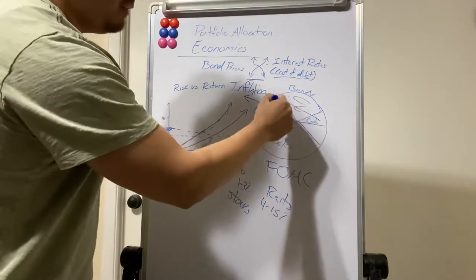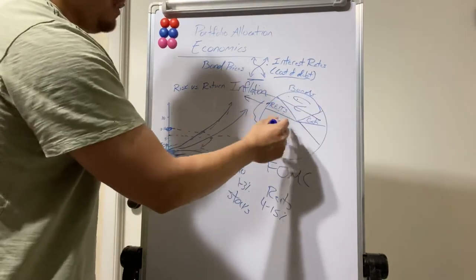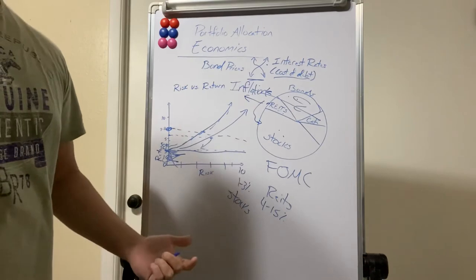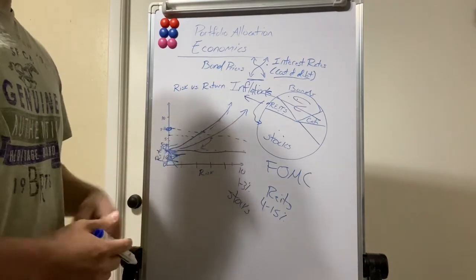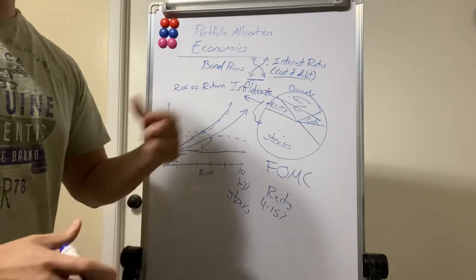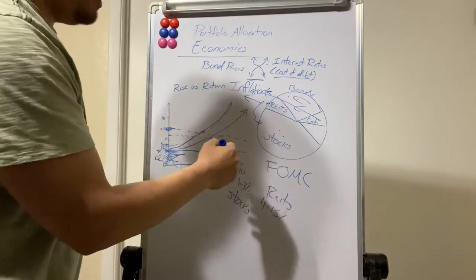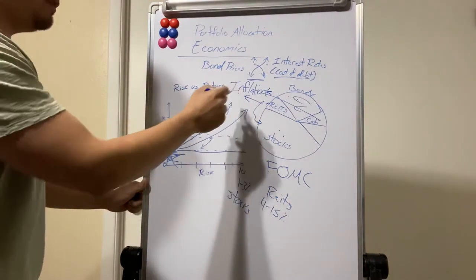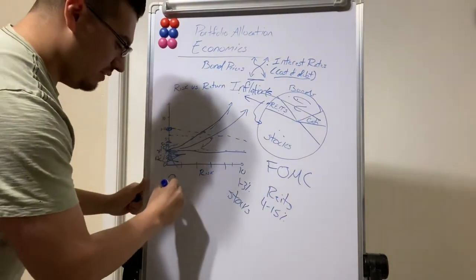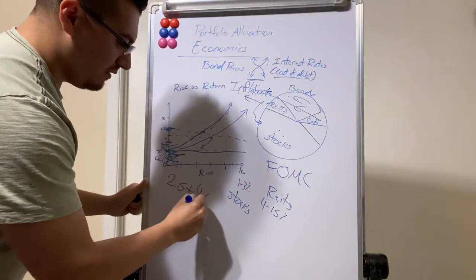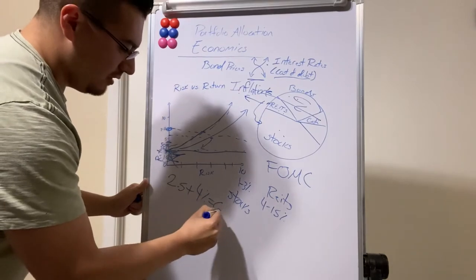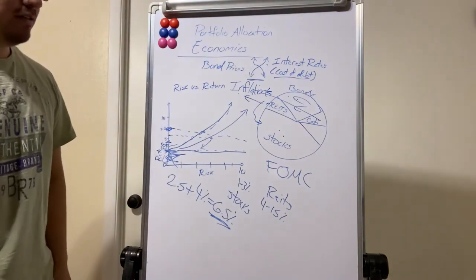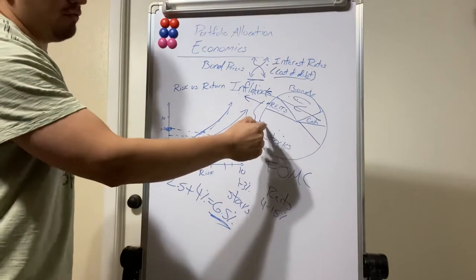Whether you invest in REITs, bonds, cash, or stocks, you want your overall portfolio to stay above the inflation rate because as you get older, things will cost more. Also consider that in retirement you're withdrawing about four percent per year — the general rule of thumb. If inflation is two and a half percent and you're withdrawing four percent, your investments need to generate at least six and a half percent return annually just to avoid losing value.